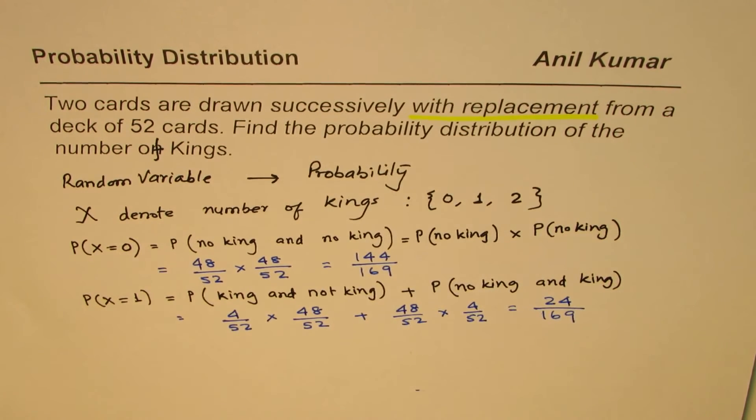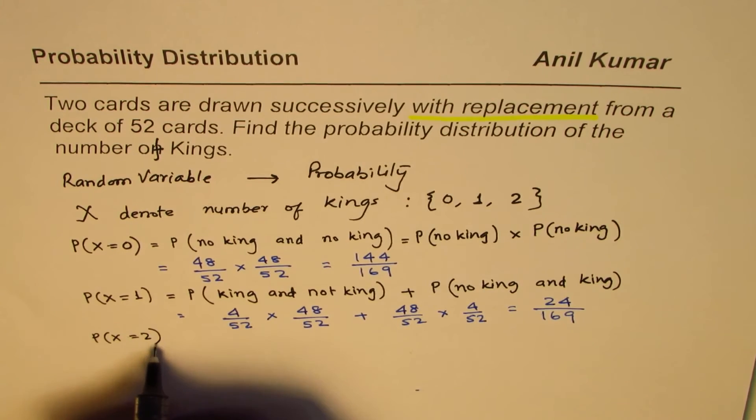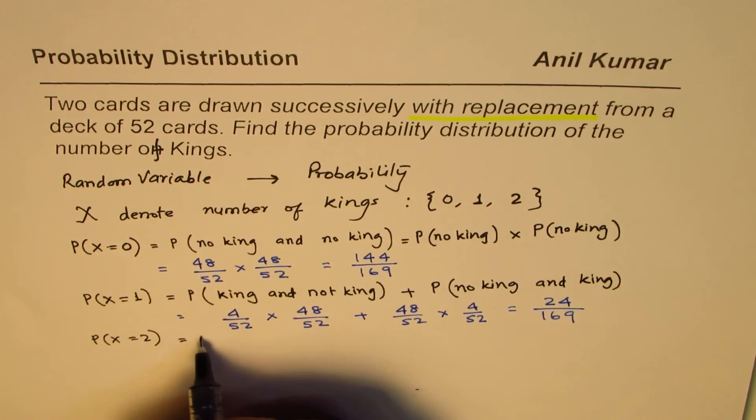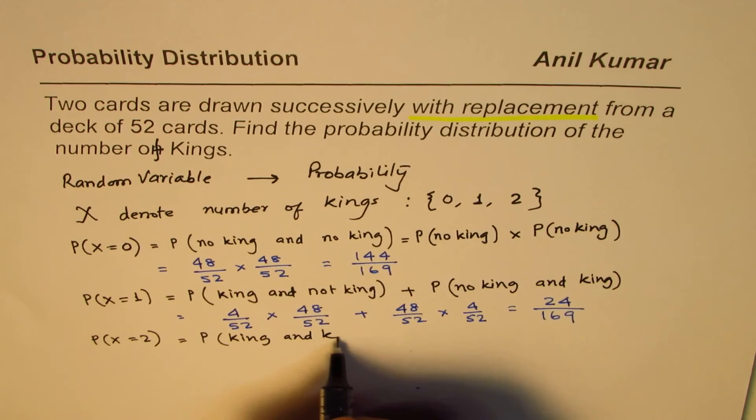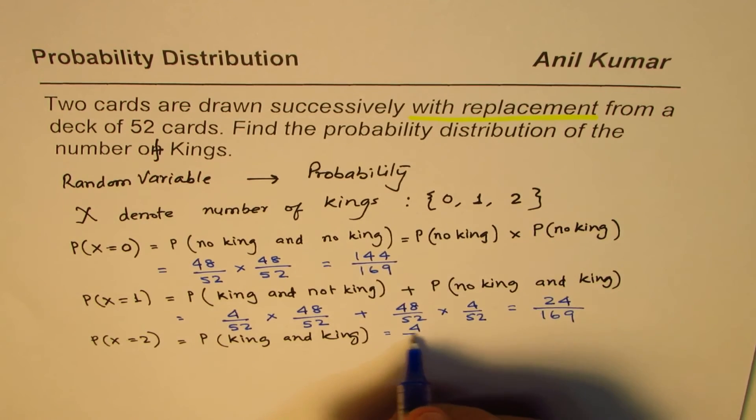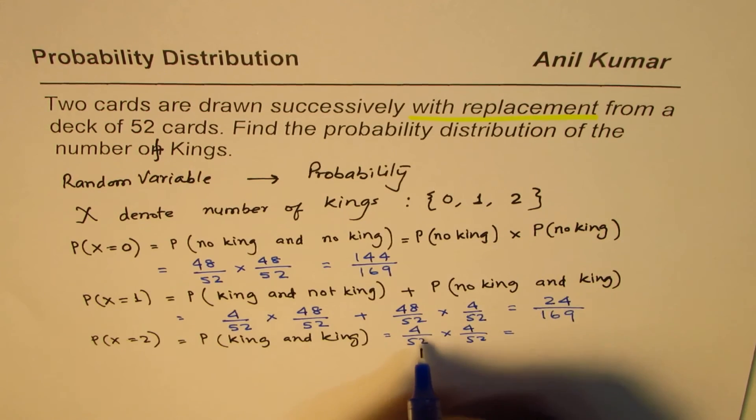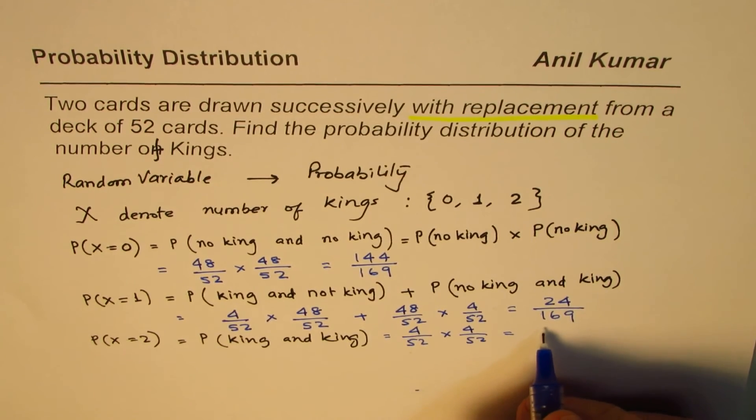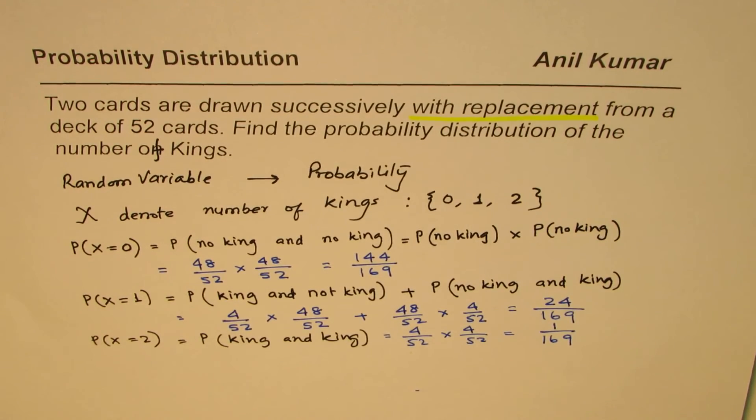Now the third case is both are kings. So that is X equals to 2, both are kings. That is to say that you draw king in the first case and another king. That really means 4 out of 52 times 4 out of 52. That is 1 over 13 times 1 over 13, or 1 over 169.